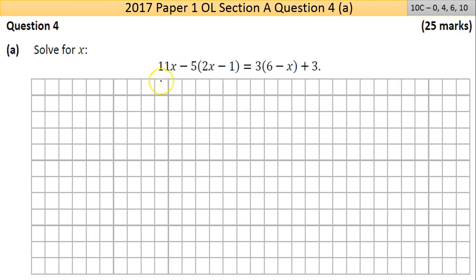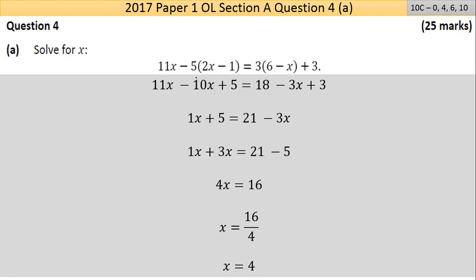To solve this, I want X on one side and everything else on the other. In algebra there are only a few rules to remember. First, I'll remove the brackets. The 11x term doesn't change. Multiplying: minus 5 times 2x is minus 10x, minus 5 times minus 1 is plus 5. On the right side: 3 times 6 is 18, 3 times negative x is negative 3x, and the standalone 3 doesn't change.